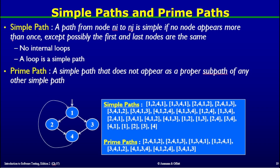A simple path is a path from some node i to some node j if none of the nodes appears more than once in that path, except possibly the first and the last nodes — they can repeat. So there will be no repeated internal nodes. In other words, a loop is a simple path.